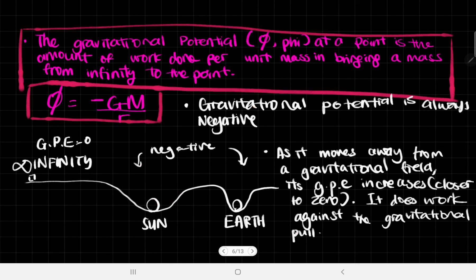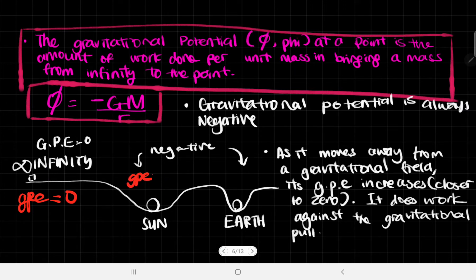So if we could represent it like this: you would have a GPE equals zero over here. Let's say we have a GPE of negative 100 — although obviously it's much, much smaller than that in reality.